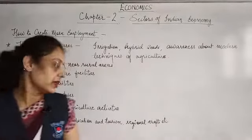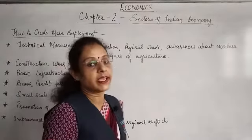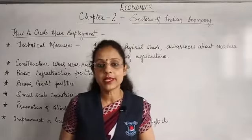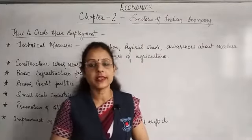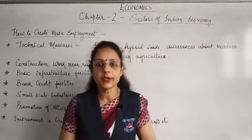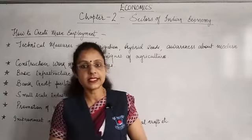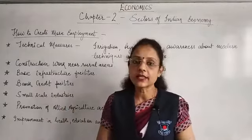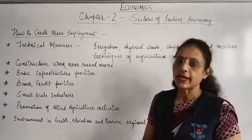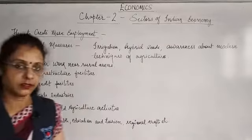Now, promotion of allied agricultural activities. Allied agricultural activities means activities that people can do alongside farming. For example, a person doing farming can also get involved in dairy farming or animal husbandry. People living near forests can collect wild honey and sell it. Similarly, bee farming is a very good option for people in the primary sector. There are many such businesses that can be done alongside farming. The government should promote and encourage these allied agricultural activities and provide training so that people can start their own businesses.